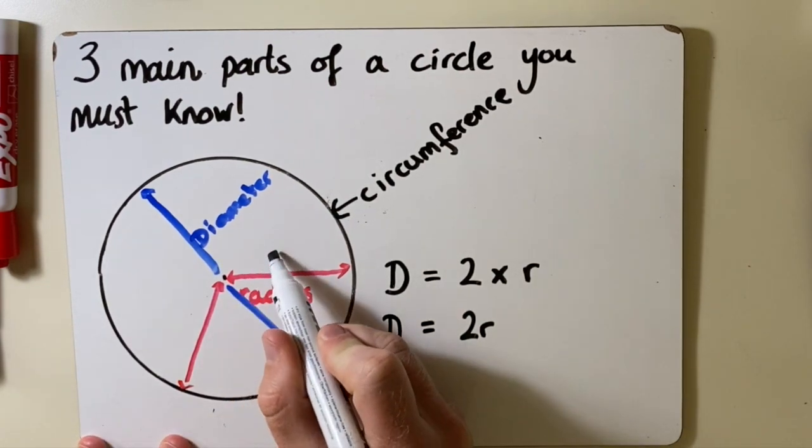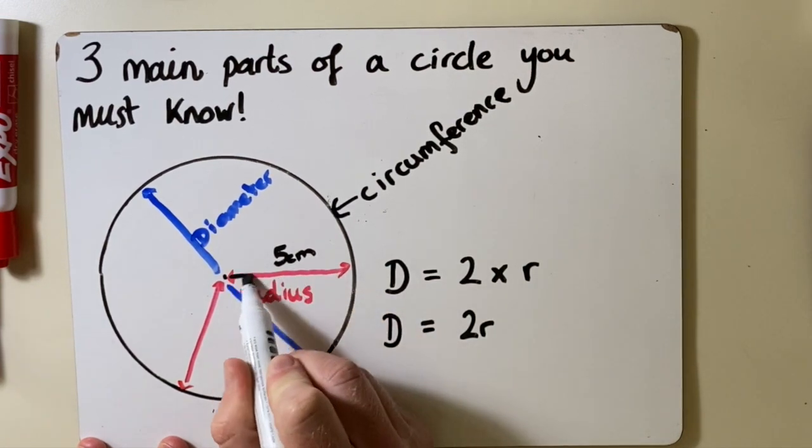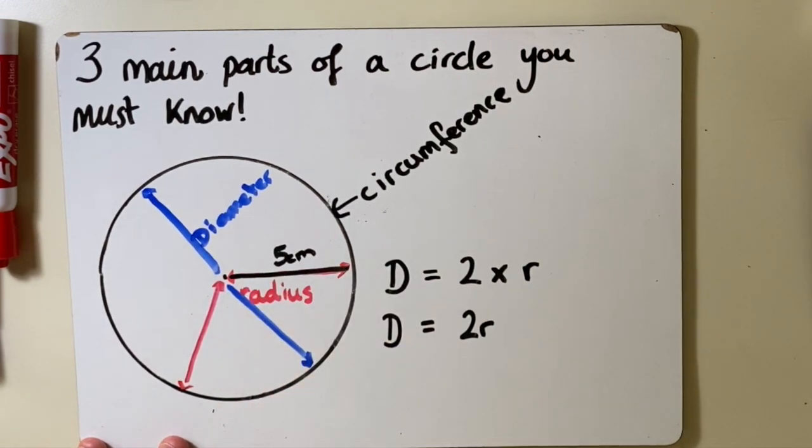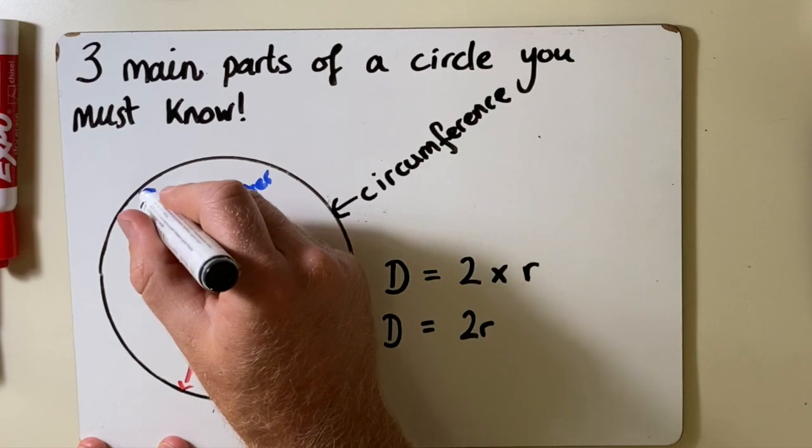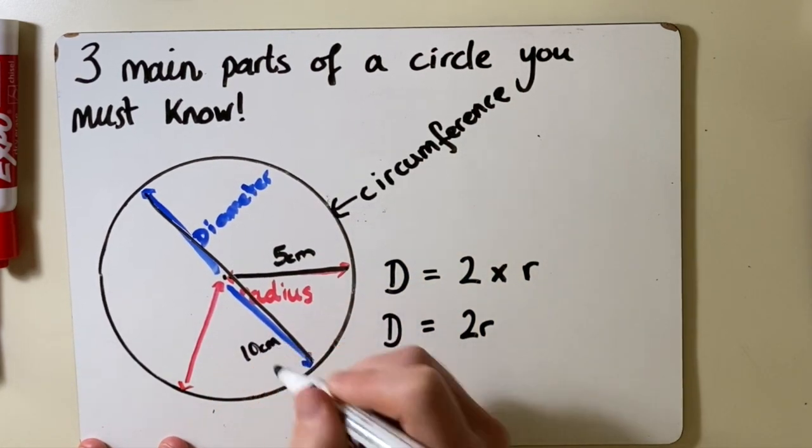So if I know that the radius is 5 cm here, I know that the diameter is 2 times that amount. So I know that the diameter must be 10 cm.